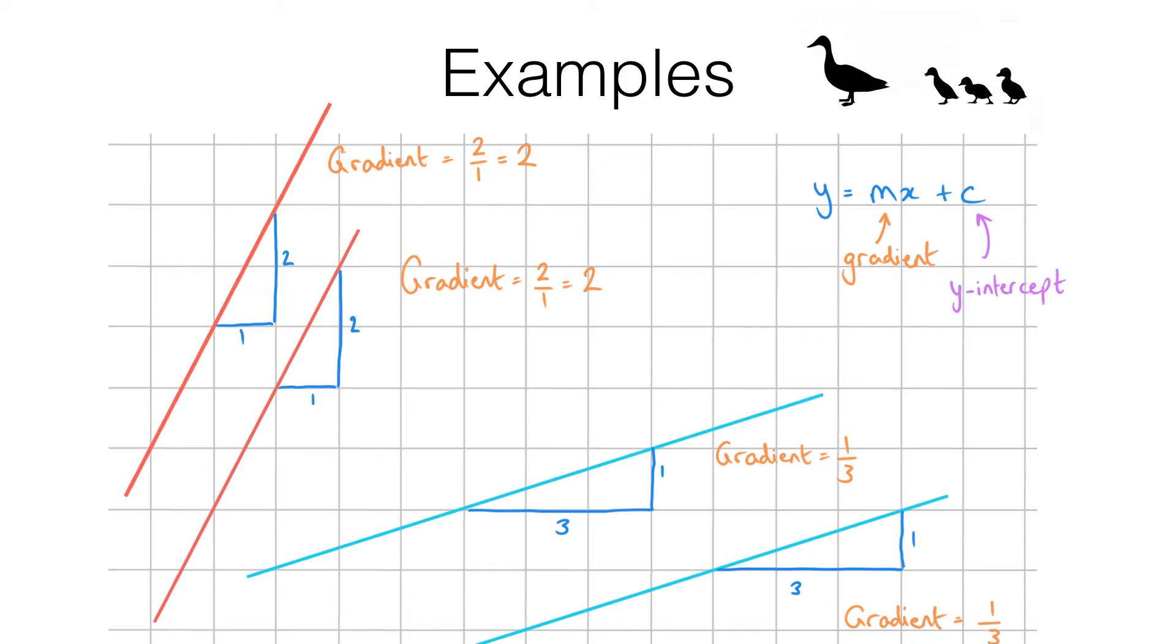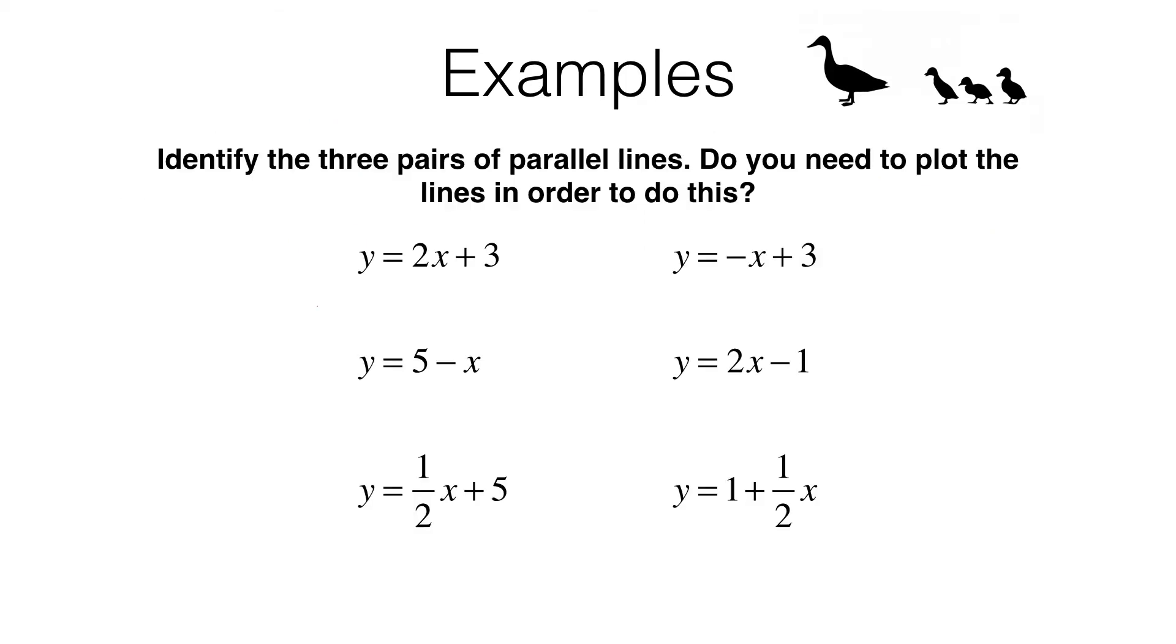Let's move on to the examples. What we have to do in this question is identify three pairs of parallel lines from these six equations. Do we need to plot the lines in order to do this? Well the answer is no. We can simply use the gradients to tell us which lines are parallel.